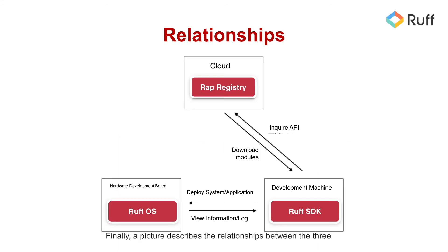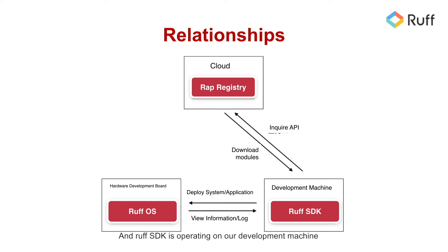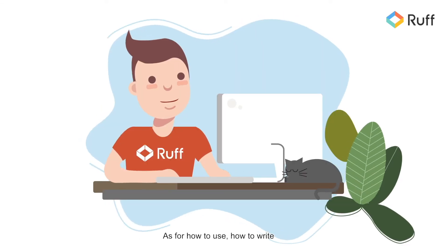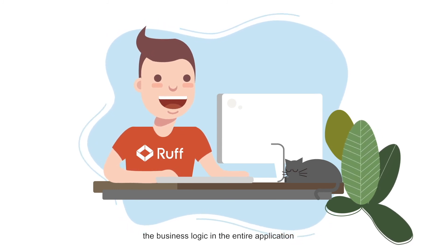Finally, a picture describes the relationships between the three components. RAP registry can be regarded as a cloud. RUF SDK is operating on our development machine. When we are conducting project development, we need to create a new project and then download some necessary modules from the cloud. As for how to use and how to write the business logic in the entire application, we need to log into the website to view the relevant APIs.